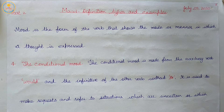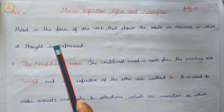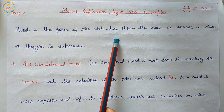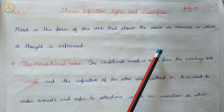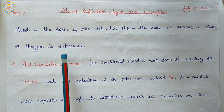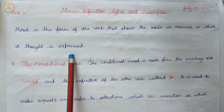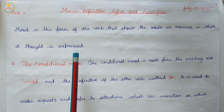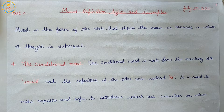What do we know about mood? Mood is the form of the verb that shows the mood or manner in which a thought is expressed. Mood refers to a verb form that shows the writer's attitude towards the content of his or her words.